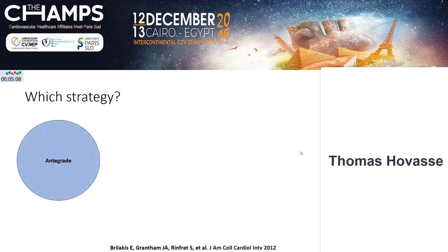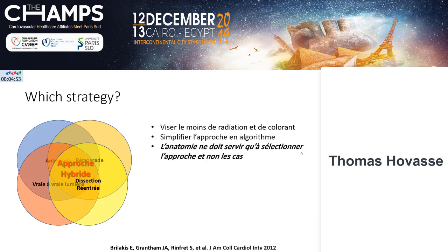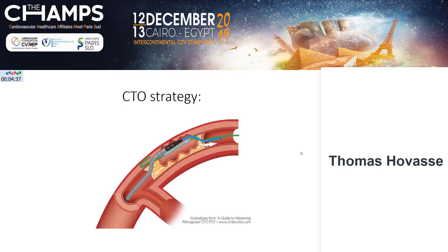With strategy, we have different options: a fully integrated approach, retrograde, true-to-true lumen, ADR — dissection re-entry. All of this makes the approach different for each patient using the hybrid algorithm. You have to aim for less contrast, less radiation, and choose a strategy based not just on the patient but on the anatomy. The retrocart strategy is very interesting and helps solve many CTO cases. You should implement this strategy as soon as the retrograde route is identified.